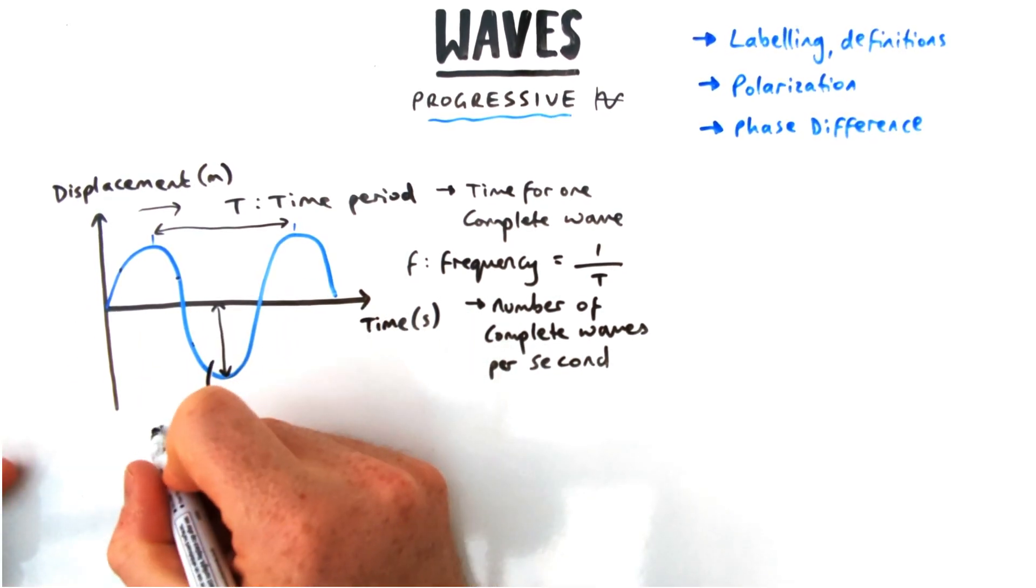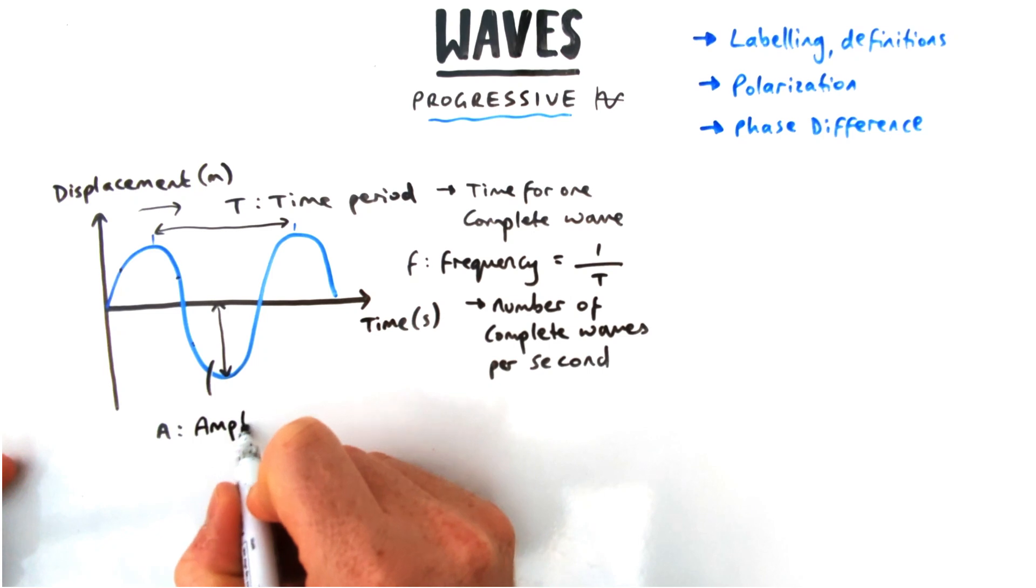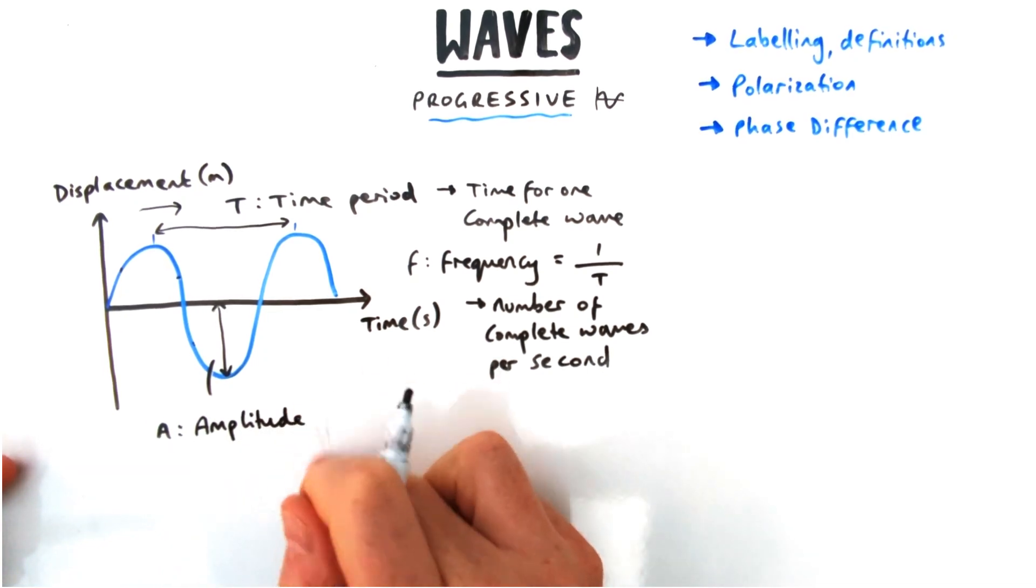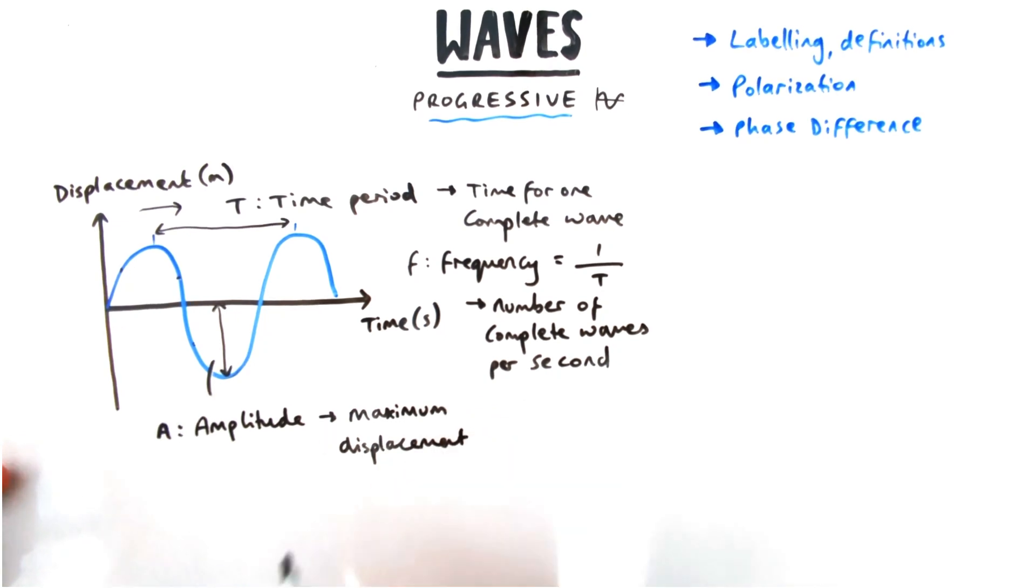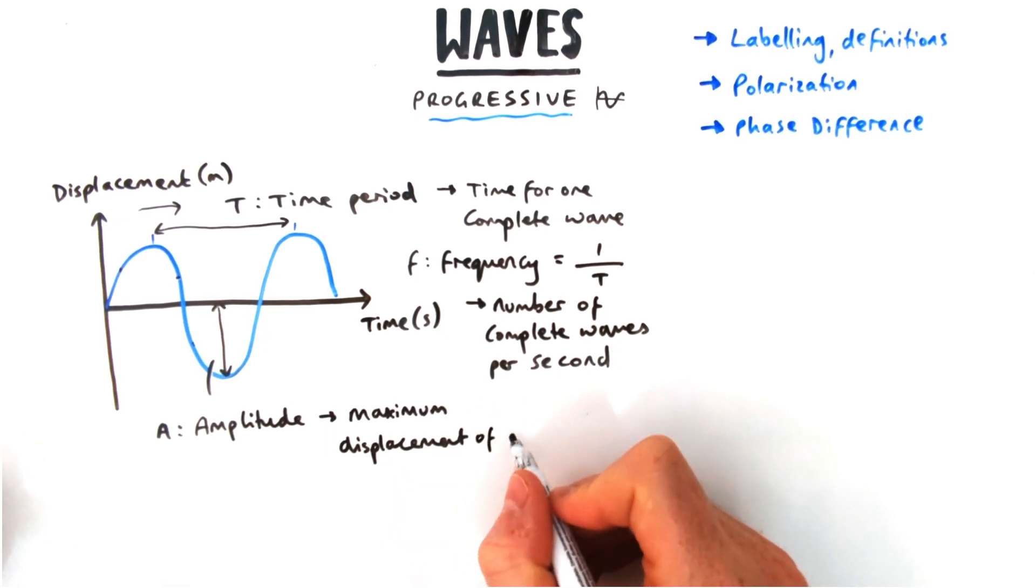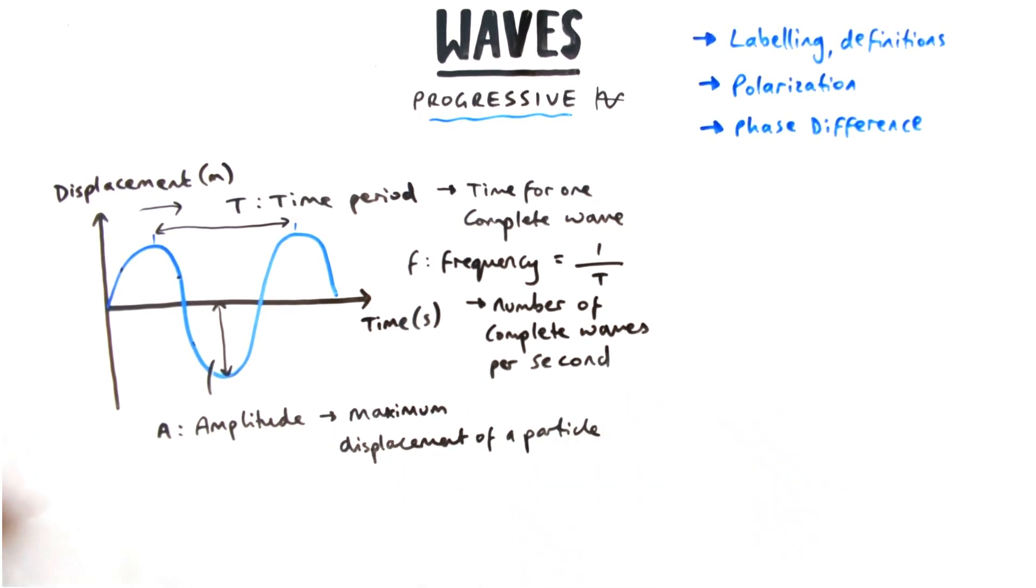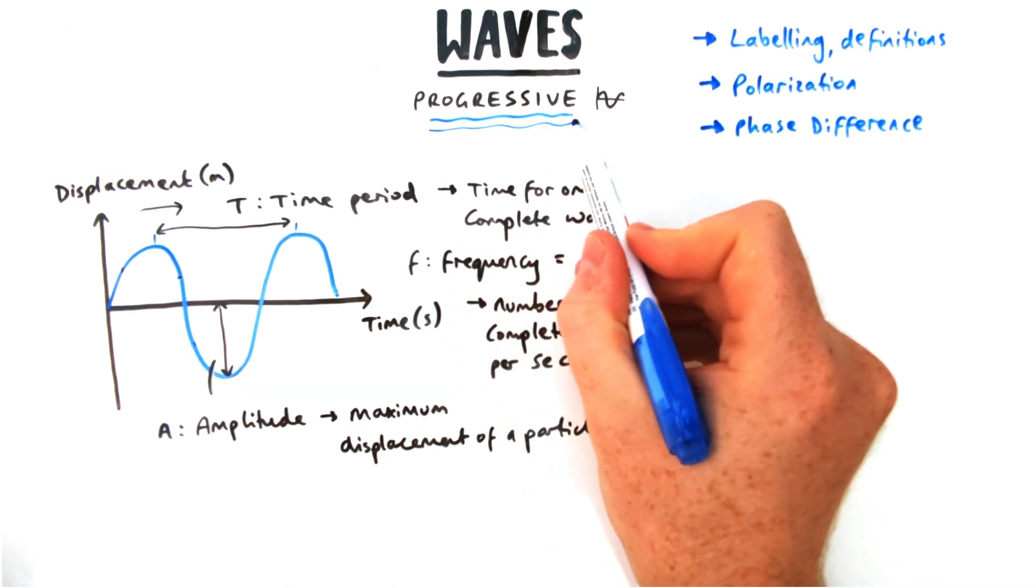We've got the equilibrium point to the maximum displacement which is the amplitude. The amplitude is equal to the maximum displacement. So displacement meaning the distance in a straight line between the equilibrium point and where the particle is. The maximum displacement refers to the amplitude.